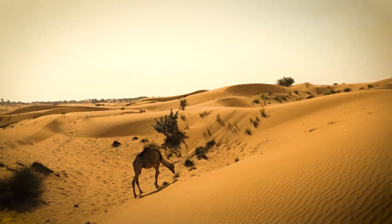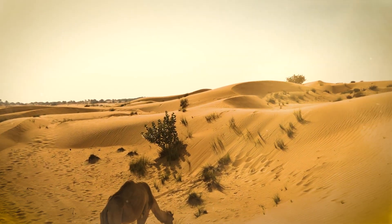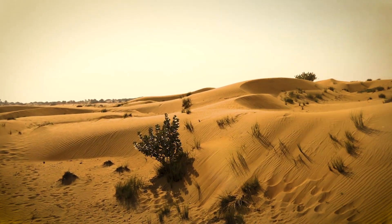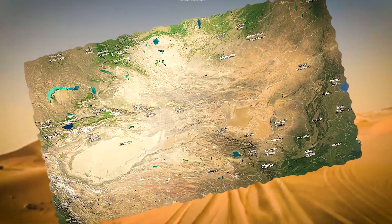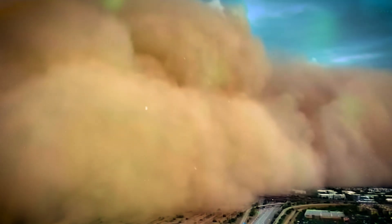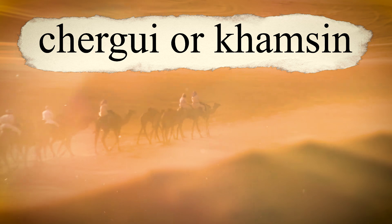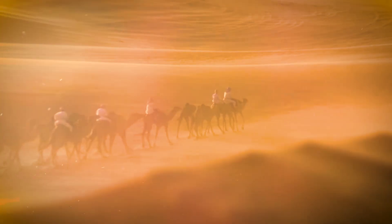Sandstorms are most common in very dry areas where there's lots of loose sand and not much vegetation to hold it down. The world's dustiest regions include North Africa, especially the Sahara Desert, the Arabian Peninsula in the Middle East, parts of Central Asia, and northern China near the Gobi Desert. These areas have strong seasonal winds that can lift huge amounts of sand and dust into the atmosphere. In the Sahara, sandstorms locally known as Chögui or Qamzin can last for hours or even days, carrying dust thousands of kilometers away.